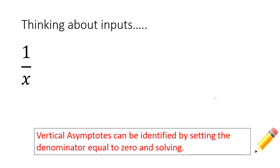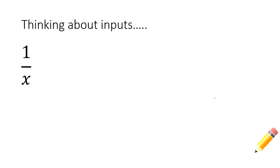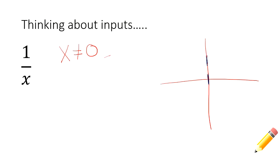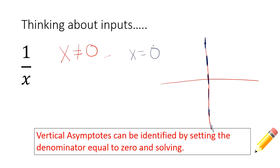What can't I plug in for x? Well, I can't divide by 0 — I can't have a 0 on the bottom. Would you agree that x cannot equal 0? On this graph, the x values equal to 0 are along the line x equals 0, which is your vertical asymptote. Vertical asymptotes can only be identified by setting the denominator equal to 0 and solving. All you need for this is that rule about vertical asymptotes.